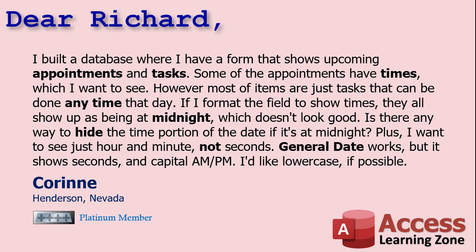Today's question comes from Corinne from Henderson, Nevada, one of my Platinum members. Corinne says: I built a database where I have a form that shows upcoming appointments and tasks. Some of the appointments have times which I want to see; however, most of the items are just tasks that can be done at any time of the day. If I format the field to show times, they all show up as being at midnight, which doesn't look good. Is there any way to hide the time portion of the date if it's at midnight? Plus, I want to see just the hour and minute, not seconds. General date works, but it shows seconds and a capital AM PM. I'd like lowercase if possible.